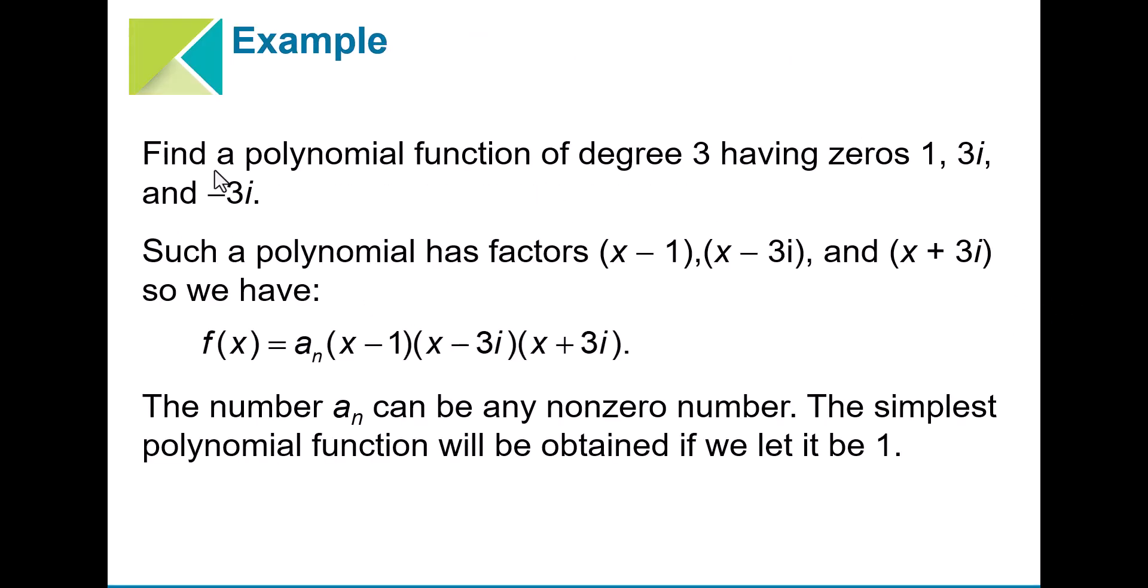For example, find a polynomial function of degree 3 having zeros 1, 3i, and negative 3i. Such a polynomial has factors (x - 1), (x - 3i), and (x + 3i), so we could construct a polynomial from these.